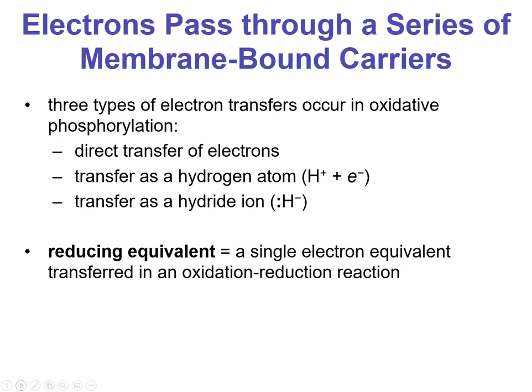There are three types of electron transfers that occur in oxidative phosphorylation: the direct transfer of electrons, transfer as a hydrogen atom (a proton and an electron), and transfers using hydride ions, which carry two electrons. Throughout your book, you may also see the term 'reducing equivalent,' which simply means a single electron being transferred in a redox reaction.